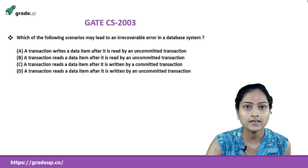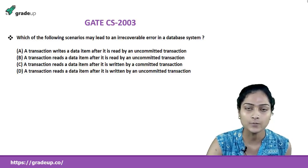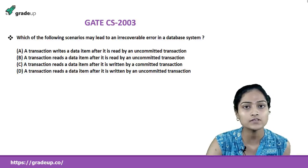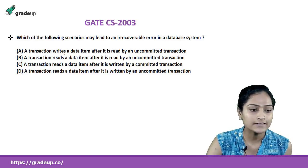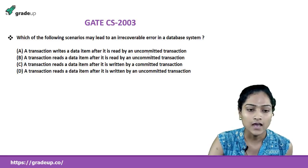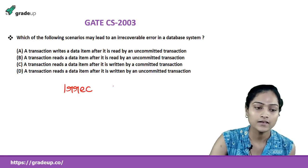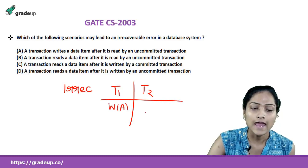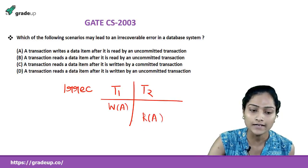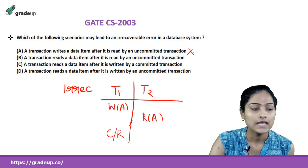You are aware what irrecoverability and irrecoverable error means in a database system. Let us go through the options. Option A says a transaction writes a data item after it is read by an uncommitted transaction. But the problem with irrecoverable error is: we have two transactions T1 and T2, where T1 writes data item A and T2 reads that data item A before commit or rollback of T1. Option A is just the opposite, so this cannot be correct.